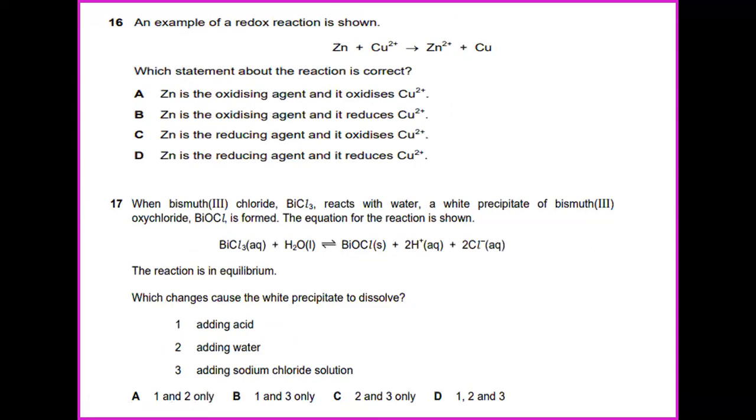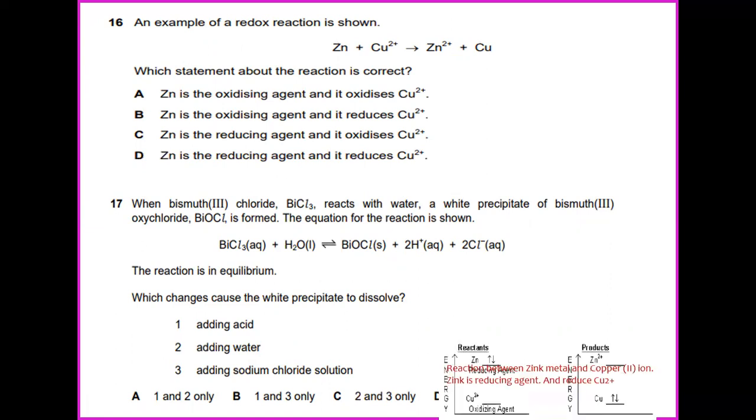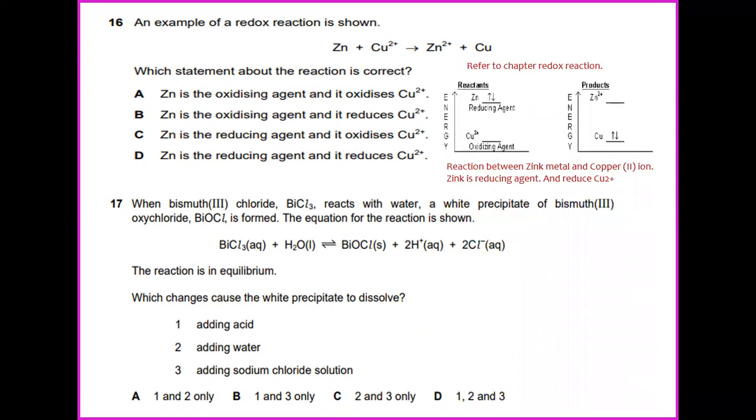An example of a reduction reaction is shown: Zn + Cu²⁺ → Zn²⁺ + Cu. From this, you can see the reaction between zinc metal and copper ion. Zinc is a reducing agent and reduces Cu²⁺.